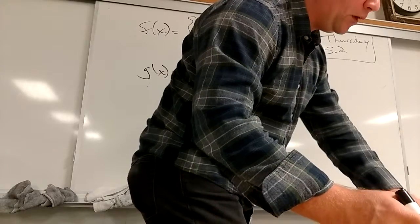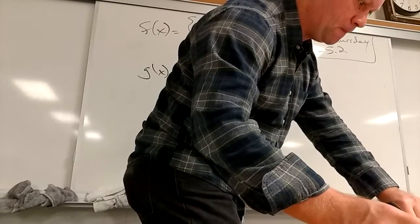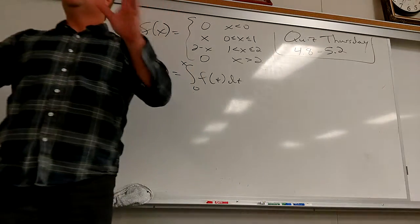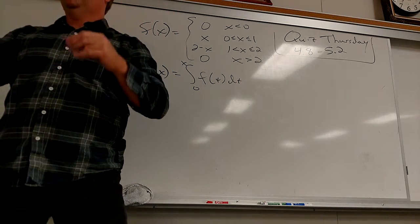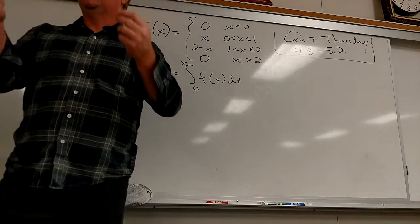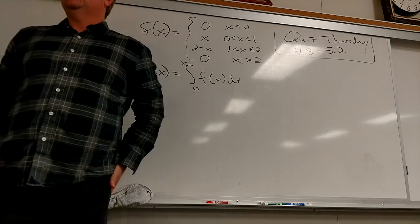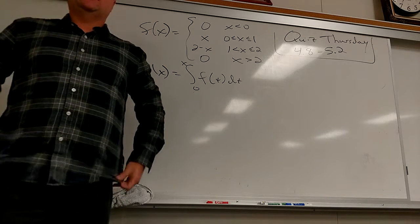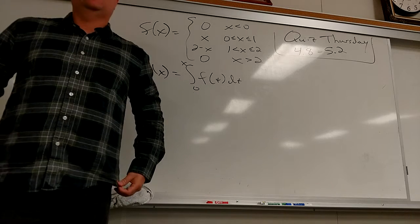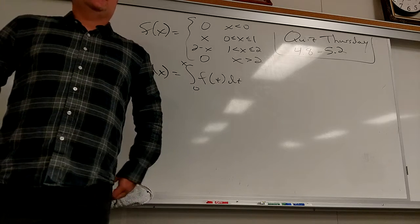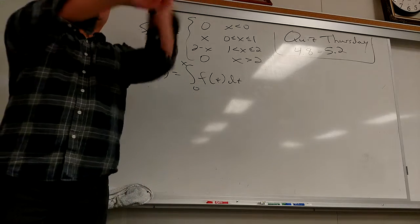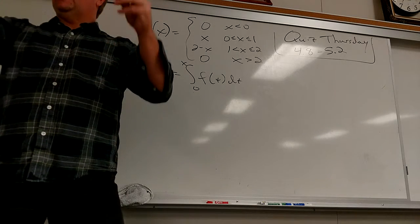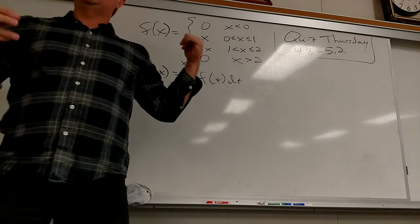Find an expression for g of x similar to the one for f of x. This is where we finally do it. We didn't finish section 5.3 yet, so we haven't officially made this connection yet. We didn't get to FTC Part 2 really yet.